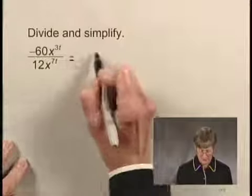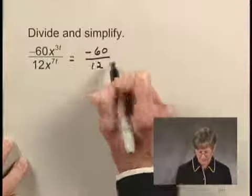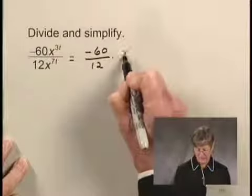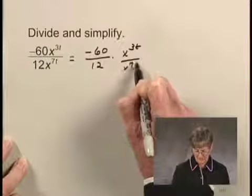Let's write this first of all as negative 60 divided by 12 times x to the 3t divided by x to the 7t.